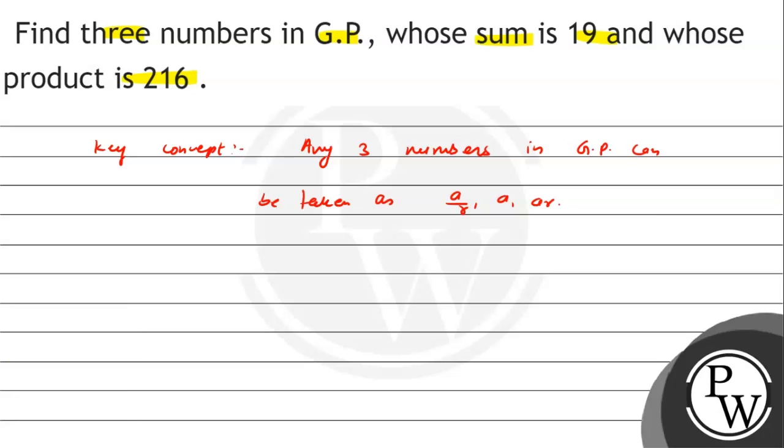Let's say three numbers whose sum is 19. The sum is 19, that means A by R plus A plus A R equals 19. If we take A common, then 1 by R plus 1 plus R equal to 19. So A times R squared plus R plus 1 divided by R equals 19. This is equation number 1.